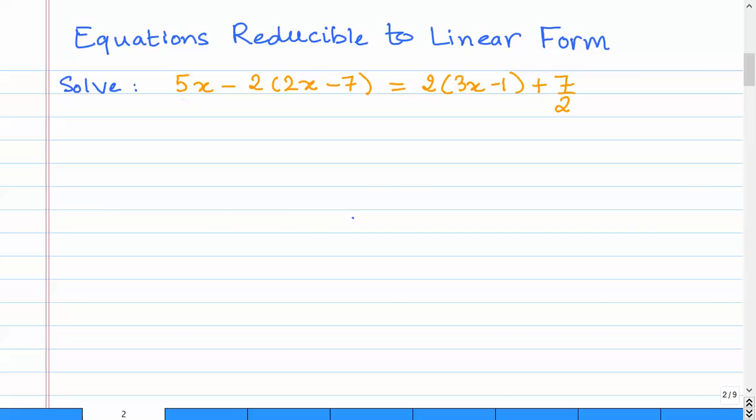We have 5x minus twice of 2x minus 7 equals to 2 times 3x minus 1 plus 7 by 2.